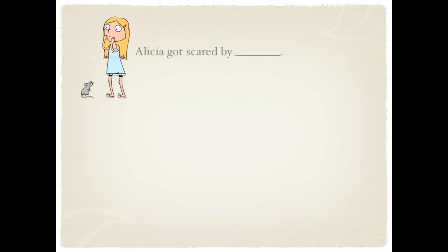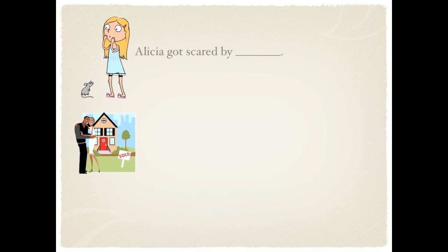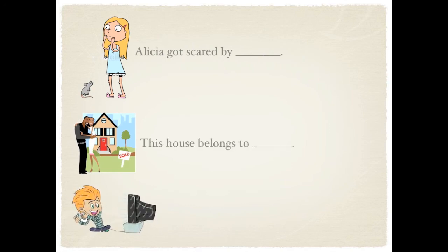Another example. Alicia got scared by it — the mouse. This house belongs to them — the couple, the man and the woman. And his video game belongs to him — the boy.